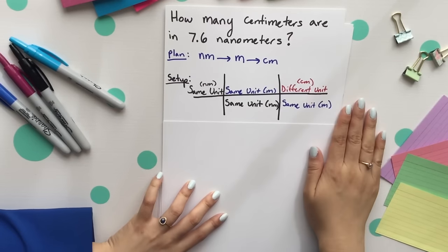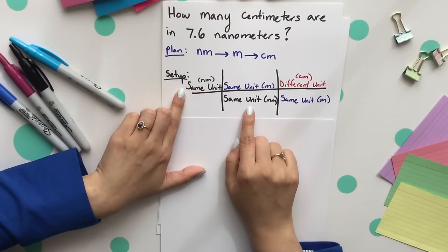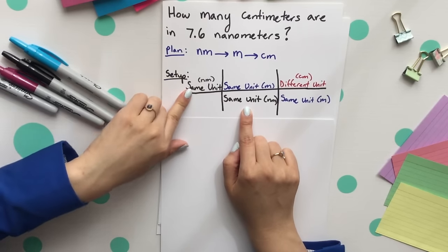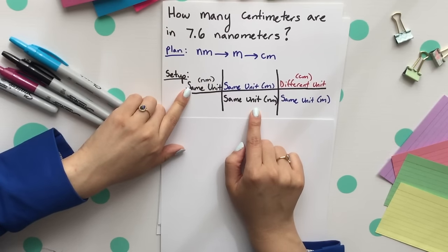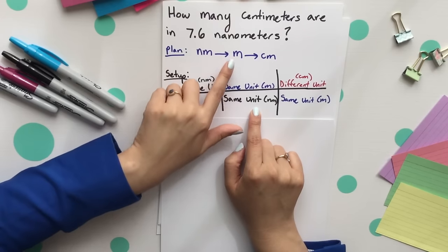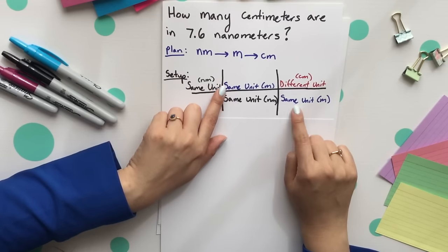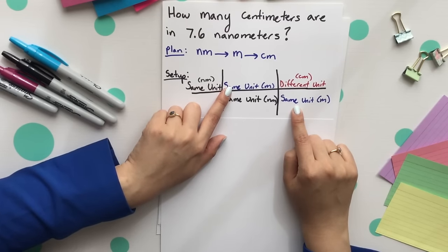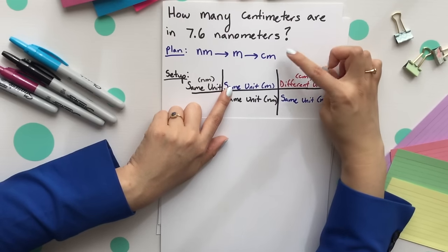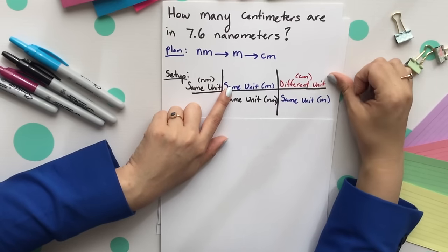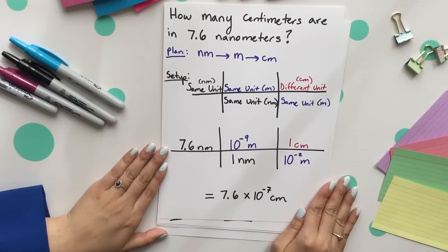Our setup will then look something like this where we have our same unit which is in this case our nanometers across from each other so they can cancel. Next, we'll get to meters. Those two units will then be across from each other so they can cancel and our last unit on top is what we're looking for which is centimeters. So our setup will look like this.